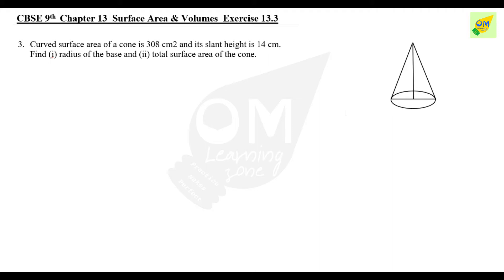What is the curved surface area? Now, what we have to do is use the CSA formula. The curved surface area of the cone — we apply π×r×l, using 22 by 7. So, π into r into l is equal to 308 cm².